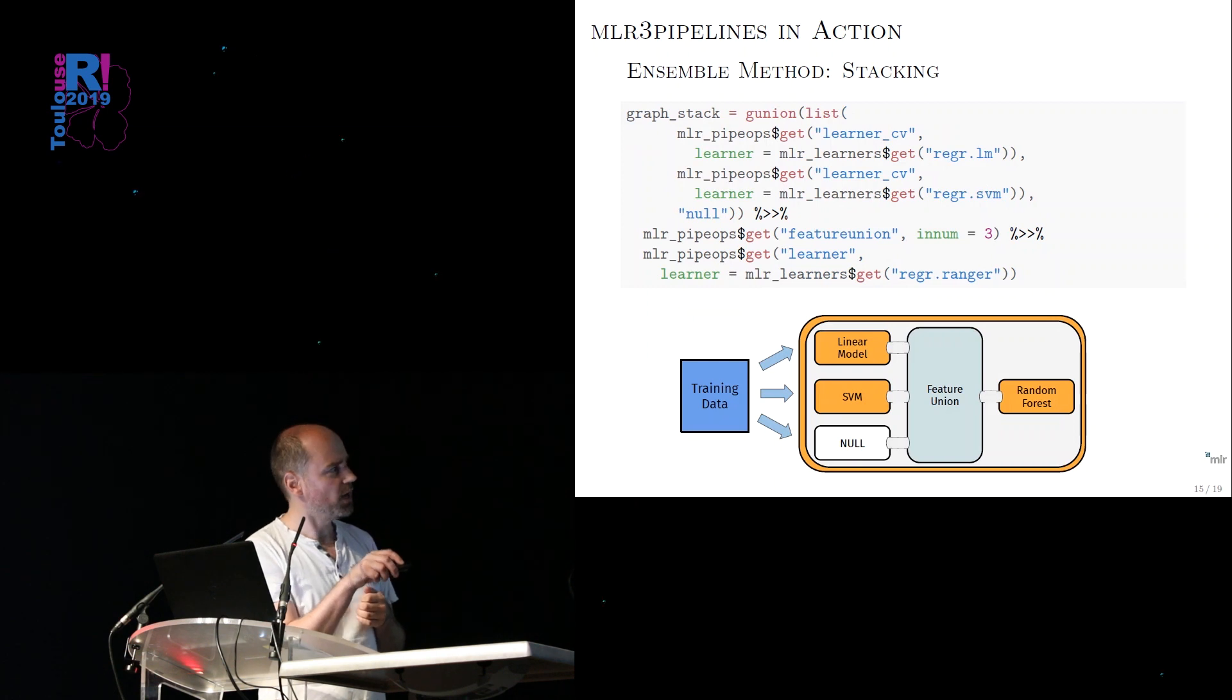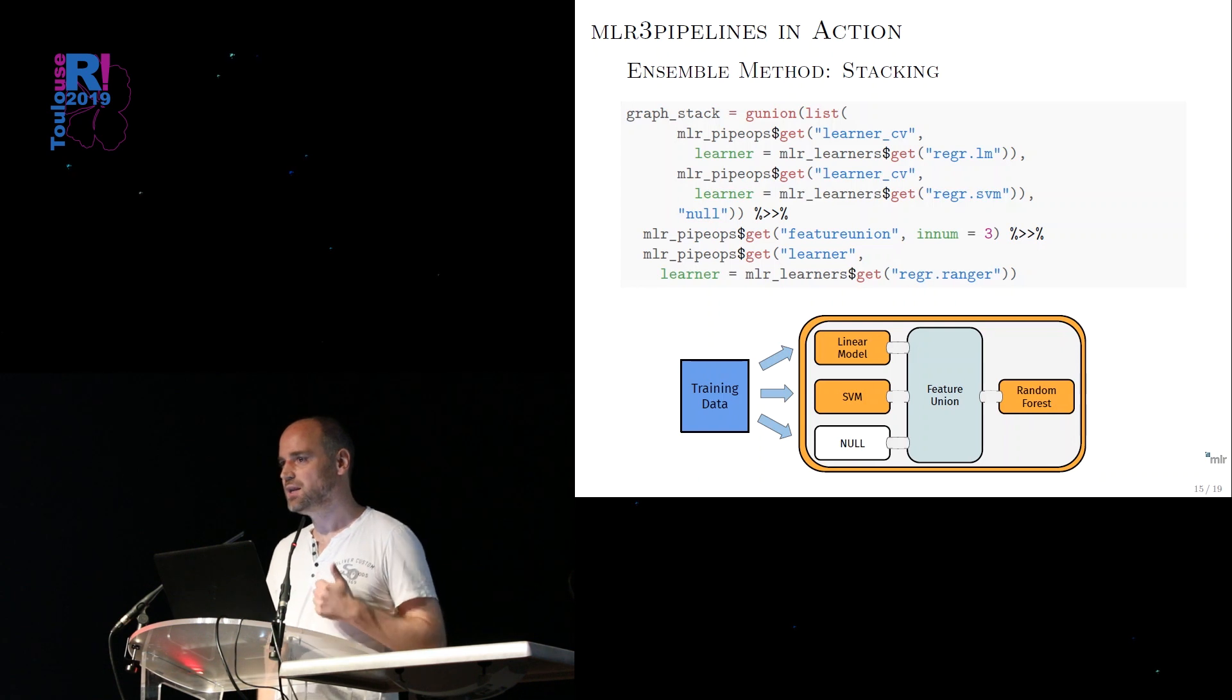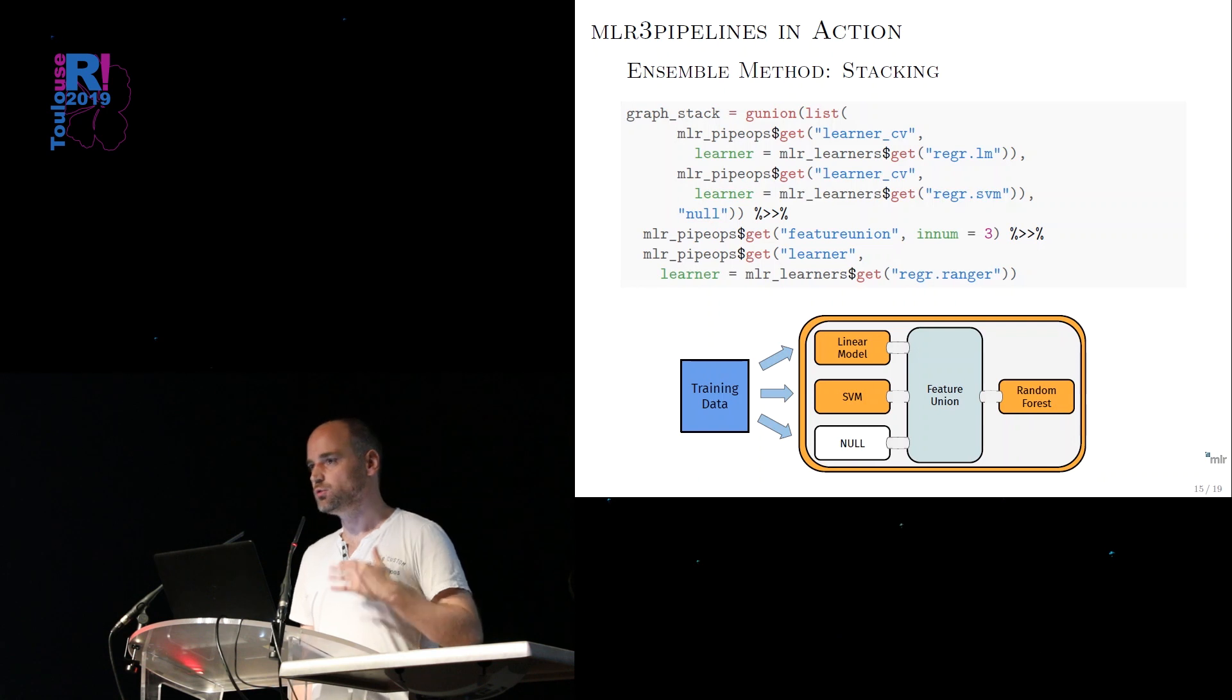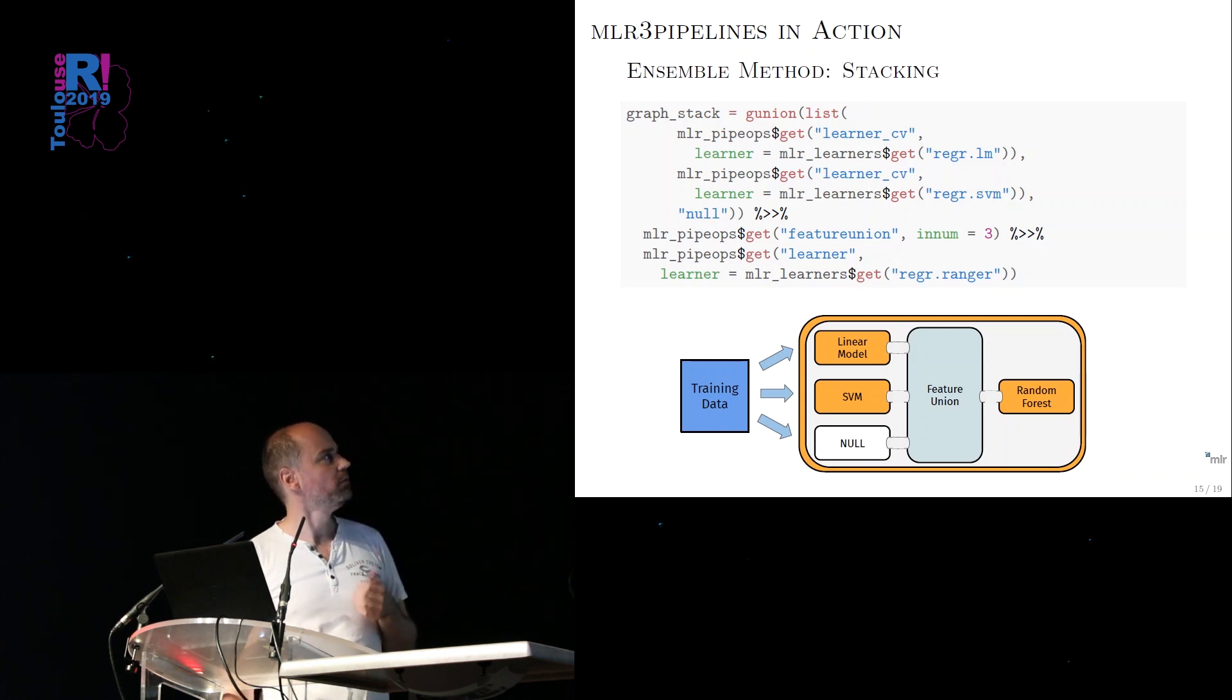So we set up a linear model here. We set up an SVM. We have a certain null operator. So the null operator just passes the data through. Then you do a feature union. What I also should say, we are not really using the normal pipe op learner here. We are using a cross-validation learner, or cross-validation pipe operator. So this cross-validates the learner, and it outputs the cross-validated predictions. And the same for the SVM. And this passes through the original features. And then we do a stacking random forest on this, which can actually combine not only the original underlying base learners in a weighted fashion, but you can even do this depending on feature values. So different kinds of stacking models locally in input space. And yeah, this is a little bit verbose with maybe eight or nine, ten lines of code with shorthand notation. This should be even smaller. But this is very easy to write and set up and understand. And you can access and change all of these operations here.